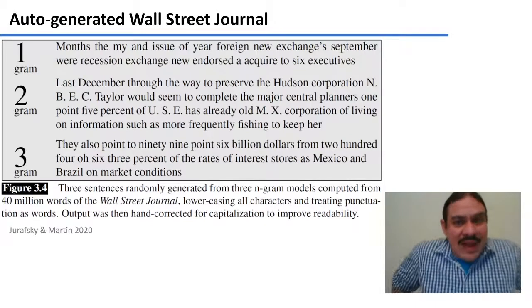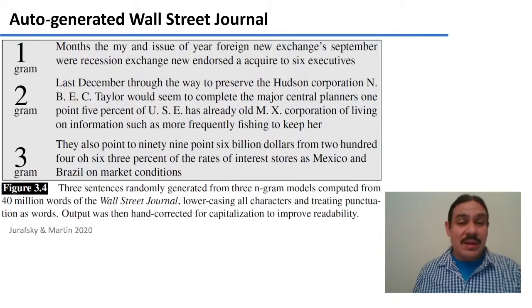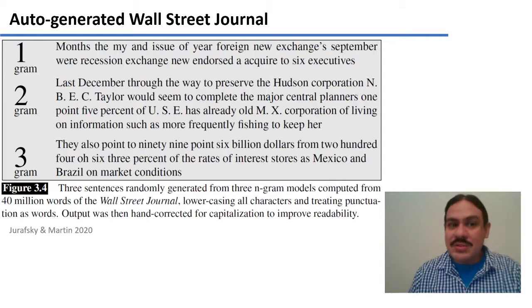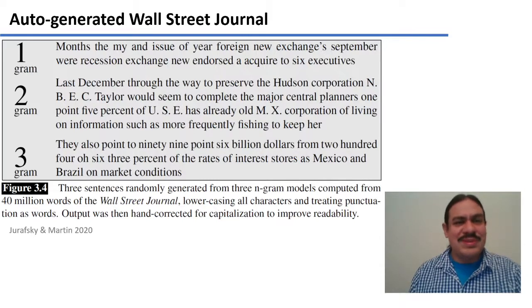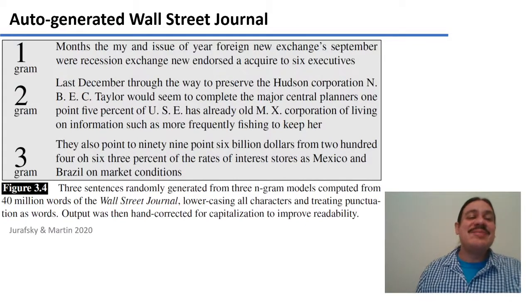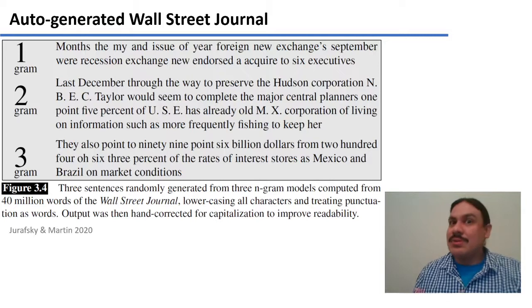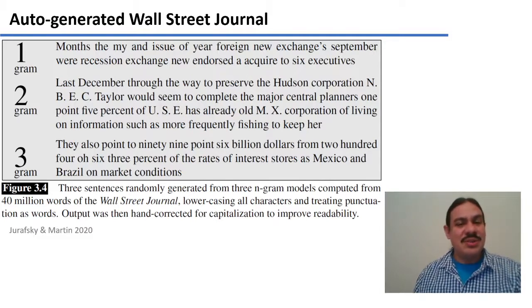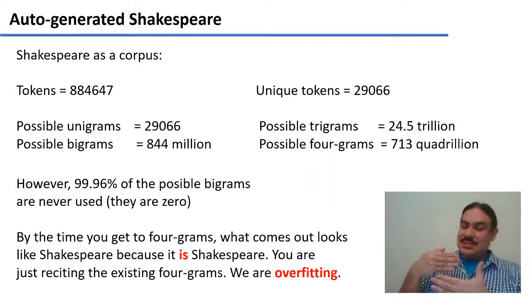Again, the input determines the output. We would get very different sentences if we trained this on the Wall Street Journal, for example. By the way, it's 40 million words from the Wall Street Journal. If it's just unigrams, we get months to my end, issue of year four, and new exchanges September, where recession exchange, new endorser, acquired to six executives. That doesn't sound like English at all. The bigram says, last December through the way to preserve the Hudson Corporation. Not great. The trigram starts to sound a little bit more like it.